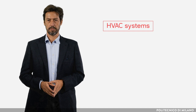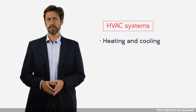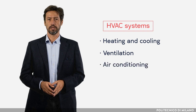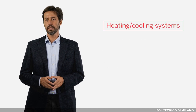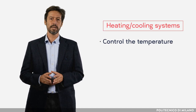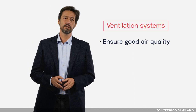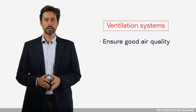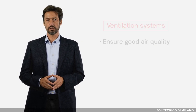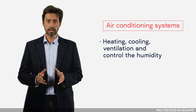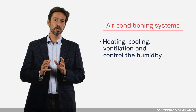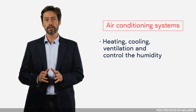The first typology of active systems we are going to discuss is referred to as HVAC systems. HVAC stands for heating and cooling, ventilation and air conditioning. Heating and cooling systems are voted to control the temperature of the indoor space. Ventilation systems pursue the goal of ensuring good air quality. Air conditioning systems achieve the goals of heating, cooling, and ventilation, and additionally control the humidity, which is a fundamental parameter to ensure thermo-hygrometric comfort.